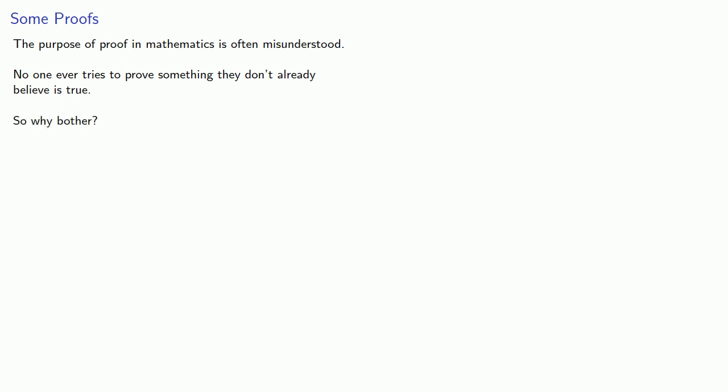And there's at least three good reasons for proving things. First, proof requires us to properly define what we're working with. If I claim that all glerms are squalish and you insist that I prove it, I'm going to have to explain what a glerm and what squalish is.